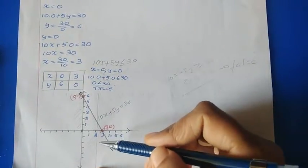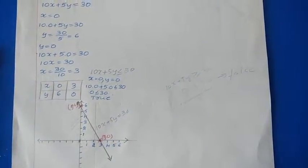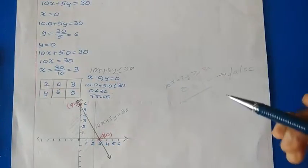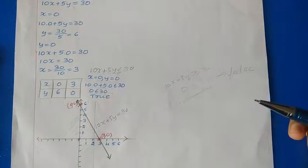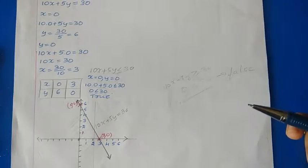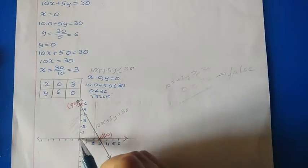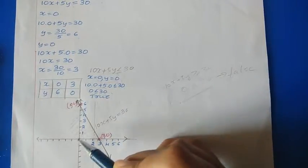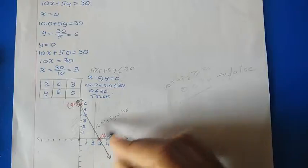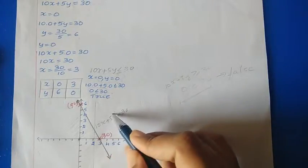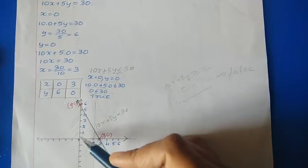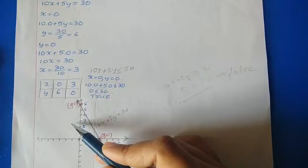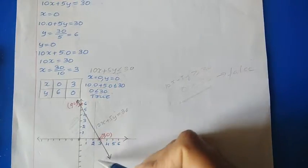So this is about the graphical solution of linear inequalities in two variables. To check whether it is a true or false inequality, take any point on the graph — generally we take (0, 0) because it is very easy to check. But if the line passes through the origin, you cannot take (0, 0); instead, take any point on the upper half plane or lower half plane.